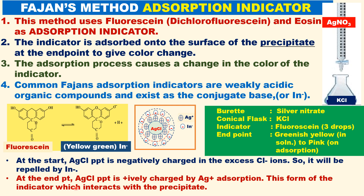At the end point, there is no Cl⁻, so there will be excess Ag⁺. Silver chloride will then adsorb excess silver ions. Therefore, at the end point, silver chloride is positively charged due to Ag⁺ adsorption. Therefore, the indicator anion is adsorbed onto it to give a pink color.